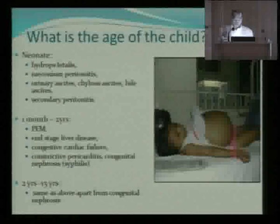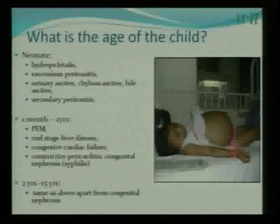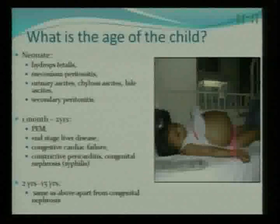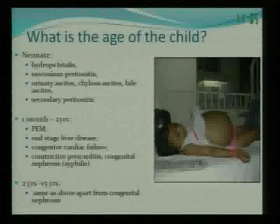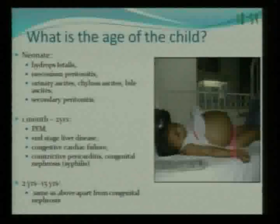As a child approaches, the key question is: what is the age of the child? The causes of ascites depend on the age, because causes are different in different individuals. In neonates, the most likely cause is hydrops fetalis. From one month to two years, protein-energy malnutrition is quite common in India and is one reason children can have ascites, along with end-stage liver disease, congestive cardiac failure secondary to chronic anemia, constrictive pericarditis, and congenital nephrosis.